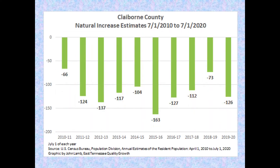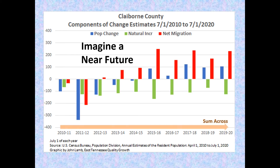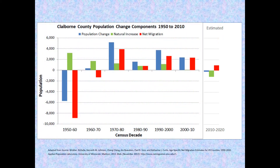Graphing the summary figures for natural increase shows a defined downward trend, progressively more negative, continuing a long-term historical trend of decrease from 1950 to 2010. We can graph population change and the two components together to see a comparative trend over 10 years. Given that this is a 10-year sequence, we can begin to imagine a near future by summing components across the decade and graphing the result as an estimated full decade from 2010 to 2020, then adding our graph of past decade trends.